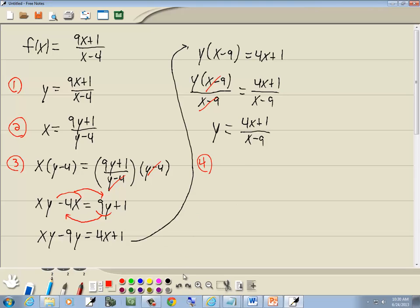Now step 4. Replace y with your inverse notation. So we're going to have the inverse of f is going to equal 4x plus 1 over x minus 9.